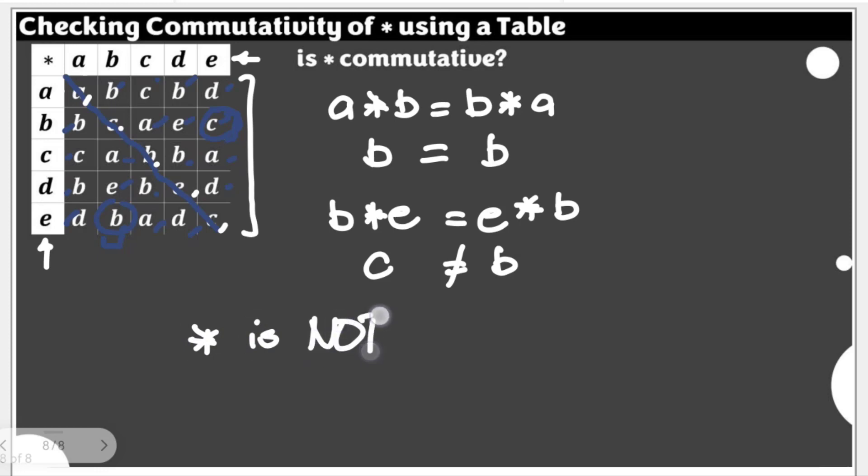Just for this one counter-example, we can now say that star is not commutative, because for star to be commutative, it should hold for all elements on the same set. So again, we're able to identify the direct counter-example without using the operation for all elements.